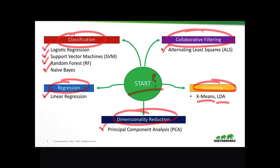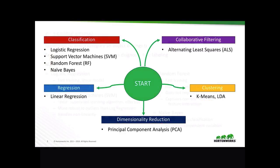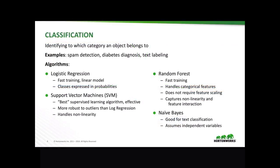Let's go over some of these algorithms in more detail. Take classification, for example, which allows you to identify which category an object belongs to using supervised learning or labeled data sets for training. Let's look at logistic regression — it's a linear model with fast training where the classes are expressed in probabilities, for example good or bad, or one or zero.